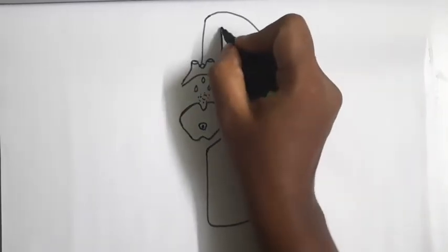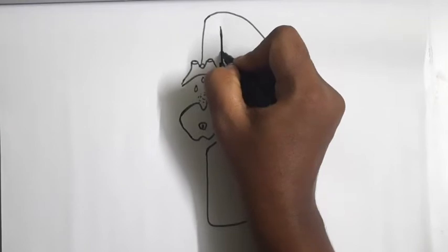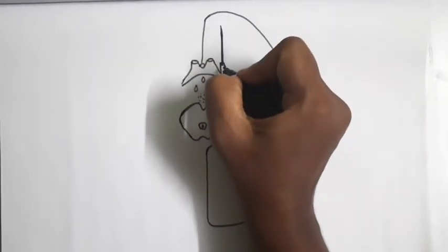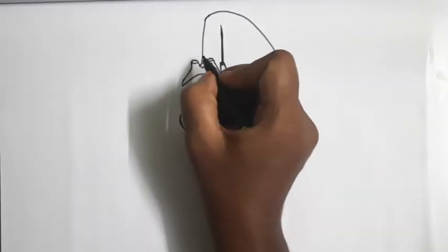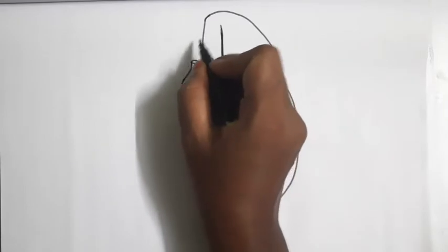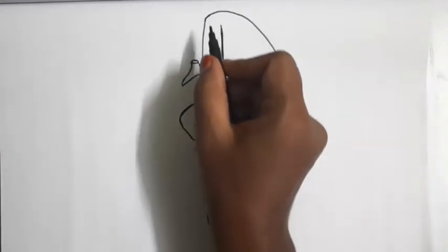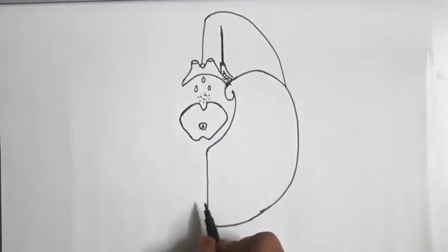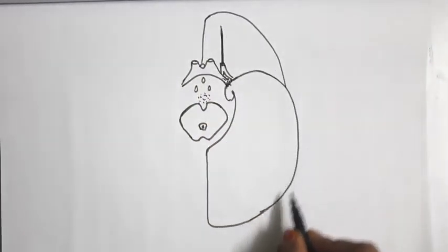Now we will see the sulci and gyri present on the anterior orbital part. The first one is the olfactory sulcus — a straight sulcus which runs from anterior to posterior, nearer to the median inferomedial border of the inferior orbital surface. This is the inferomedial border, this is the inferior border, and this is the inferolateral border.